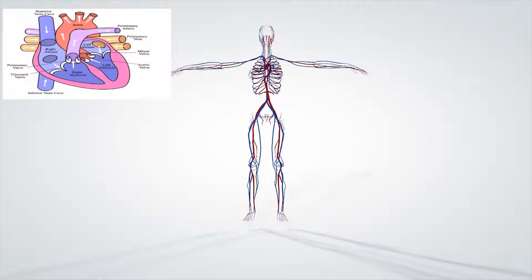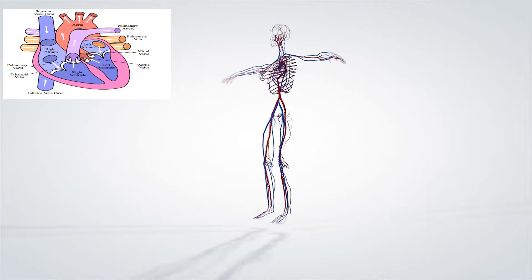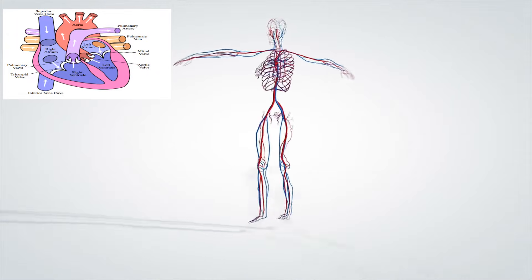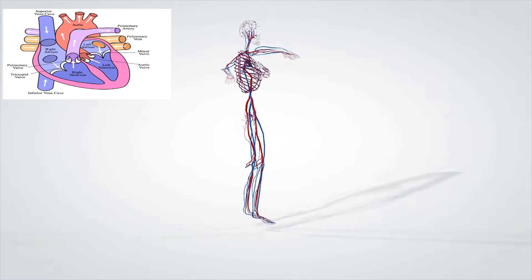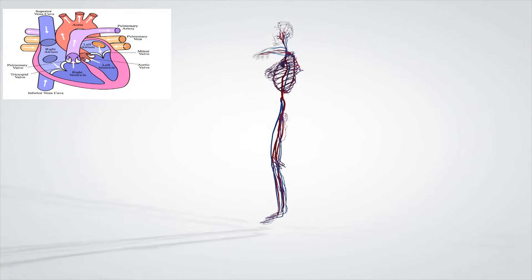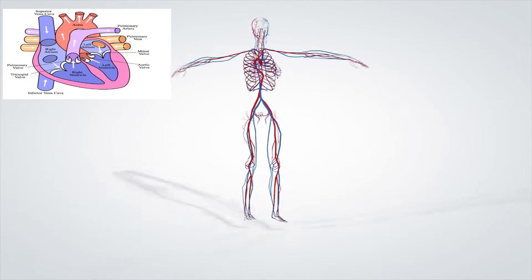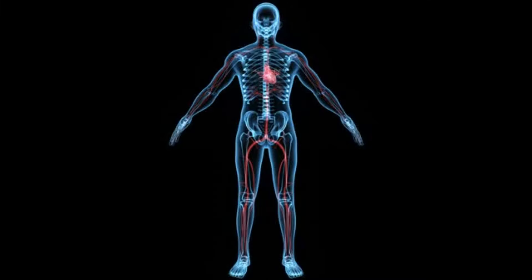The heart pumps blood in order to move nutrients, oxygen, carbon dioxide, disease-fighting white blood cells, and hormones to and from the cells in the body. The circulatory system has two main types of circulation.